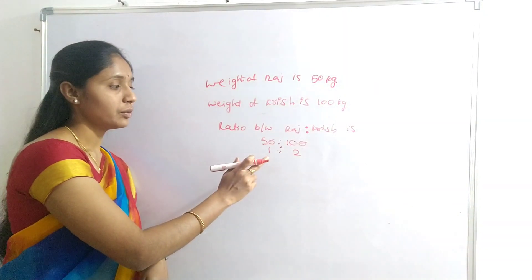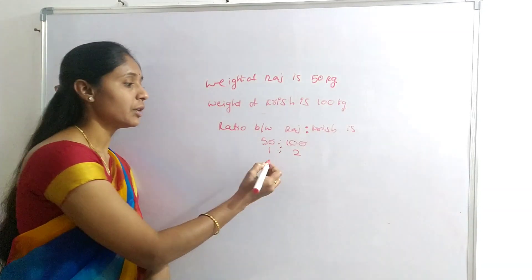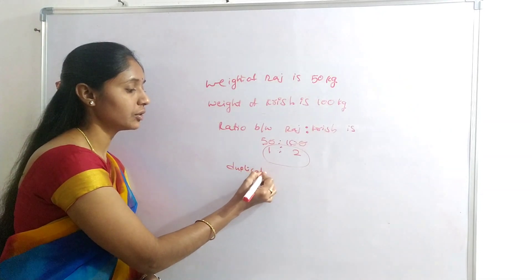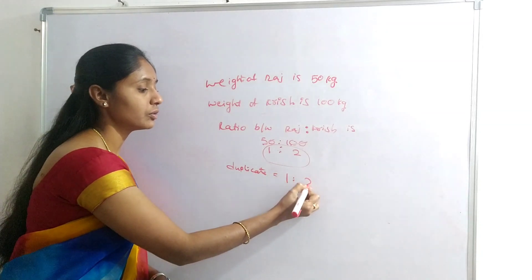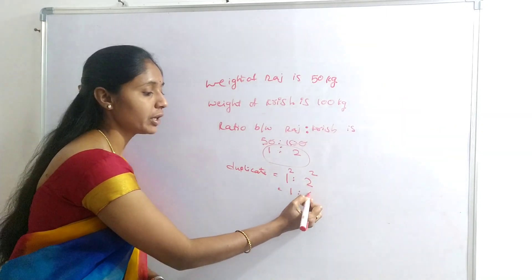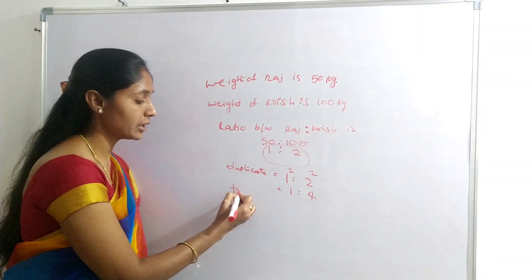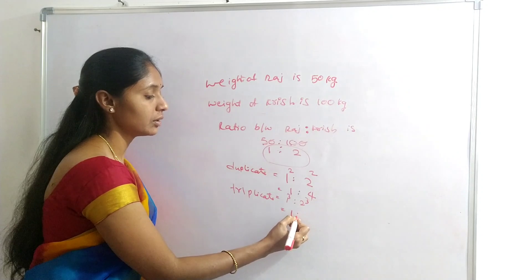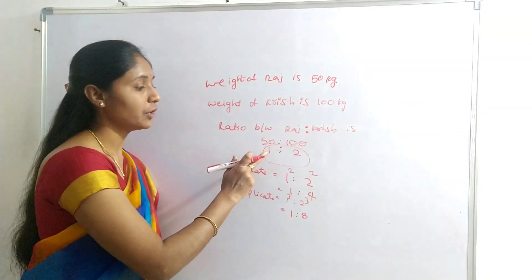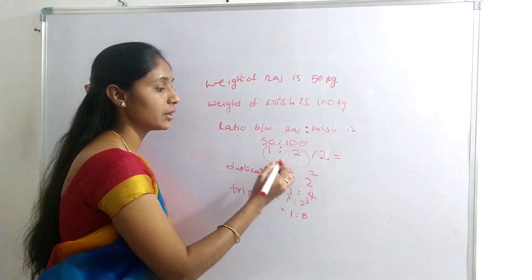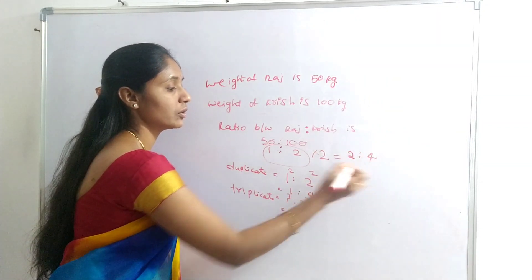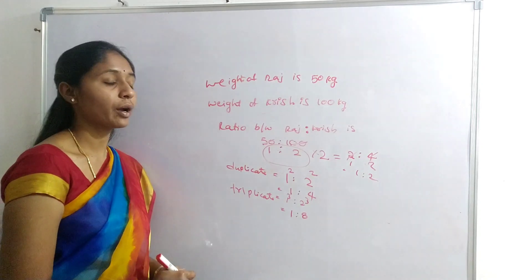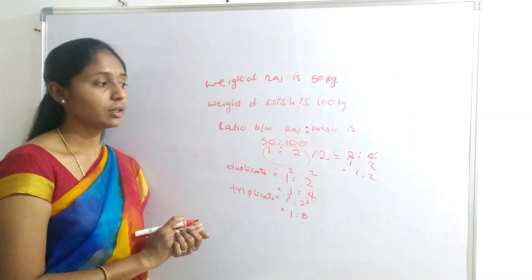One more point: if we apply multiplication or division on a fraction, the fraction value does not change. For example, duplicate — that is, squaring 1:2 gives 1²:2² = 1:4. Triplicate — that is, cubing gives 1³:2³ = 1:8. If we multiply the fraction by 2, we get 2:4, which again simplifies to 1:2. So multiplication or division does not affect the ratio.